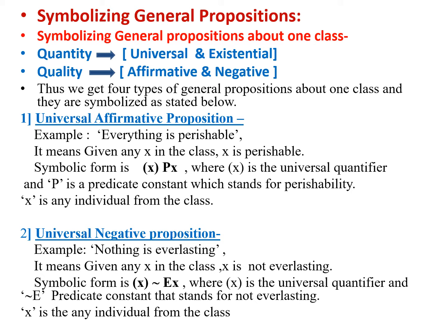The second is the universal negative proposition, where the whole class does not possess the property. For example, 'Nothing is everlasting.' Given any x in the class, that member does not possess the property everlasting. The symbolic form is: universal quantifier, curl E, small x — where x in the bracket is the universal quantifier, E is the predicate constant for 'everlasting,' and curl indicates negation, so curl E stands for 'not everlasting.' X is any individual from the class.